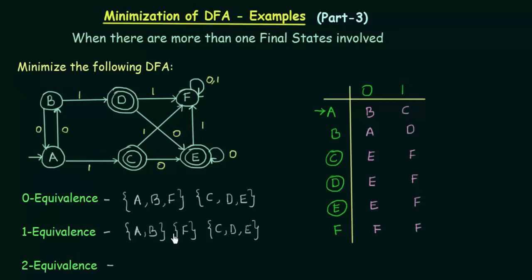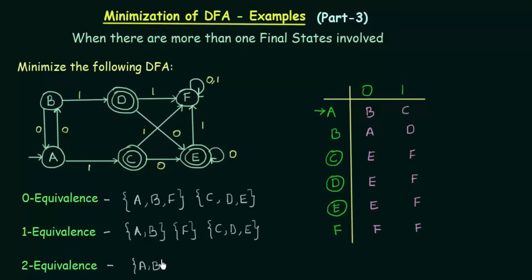Now let us come to two equivalence. For two equivalence I have to use the row of one equivalence for checking. Now I have three sets. I have to check if elements in the same set are two equivalent to each other. Let me check A and B. On input zero they go to B and A, which are in the same set — fine. On input one they go to C and D, which are also in the same set. So A and B are two equivalent, and I can put them in the same set. F is by itself, so I just write it down as it is.